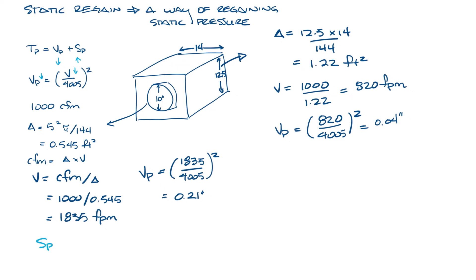I'm going to say that we have a half inch of static pressure on the inlet of this box. So the total pressure is equal to the 0.21 velocity pressure that we calculated earlier plus 0.5 equals 0.71 inches of pressure at the inlet.